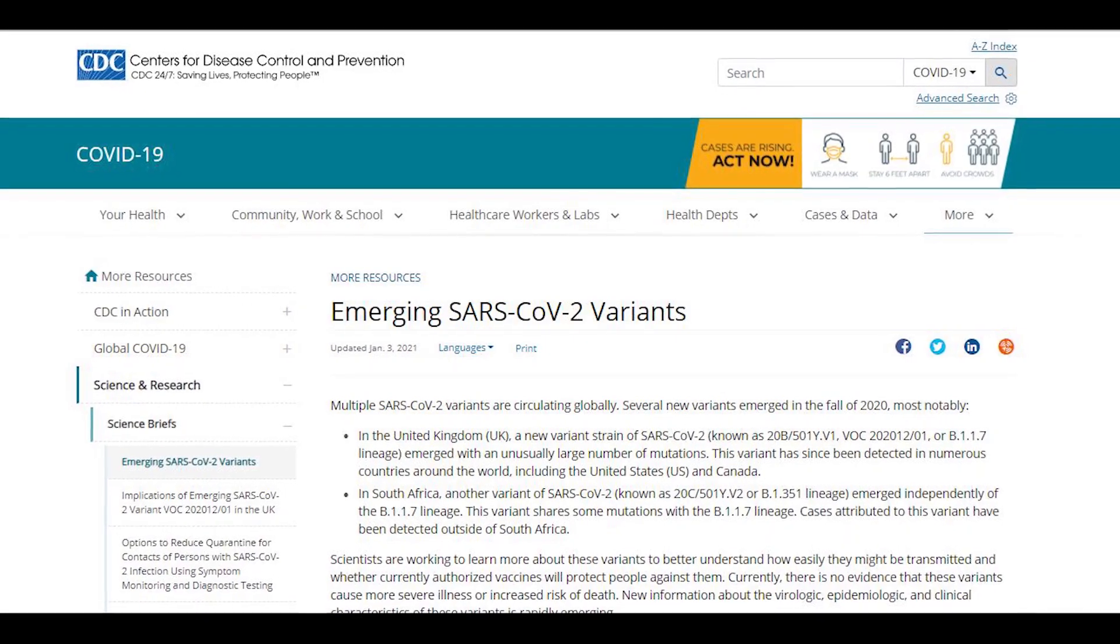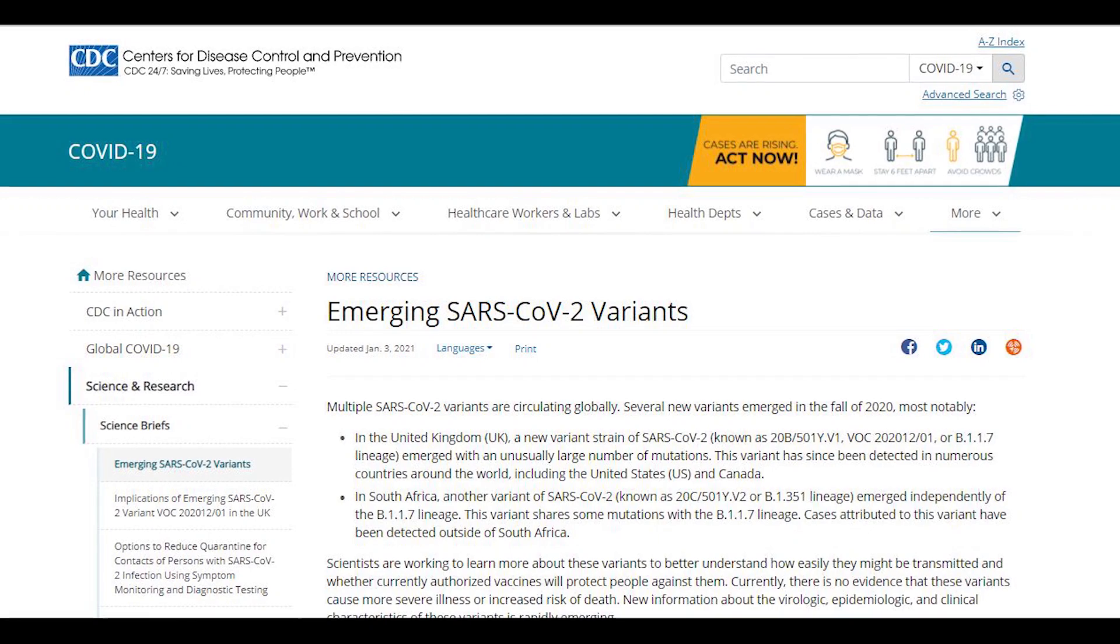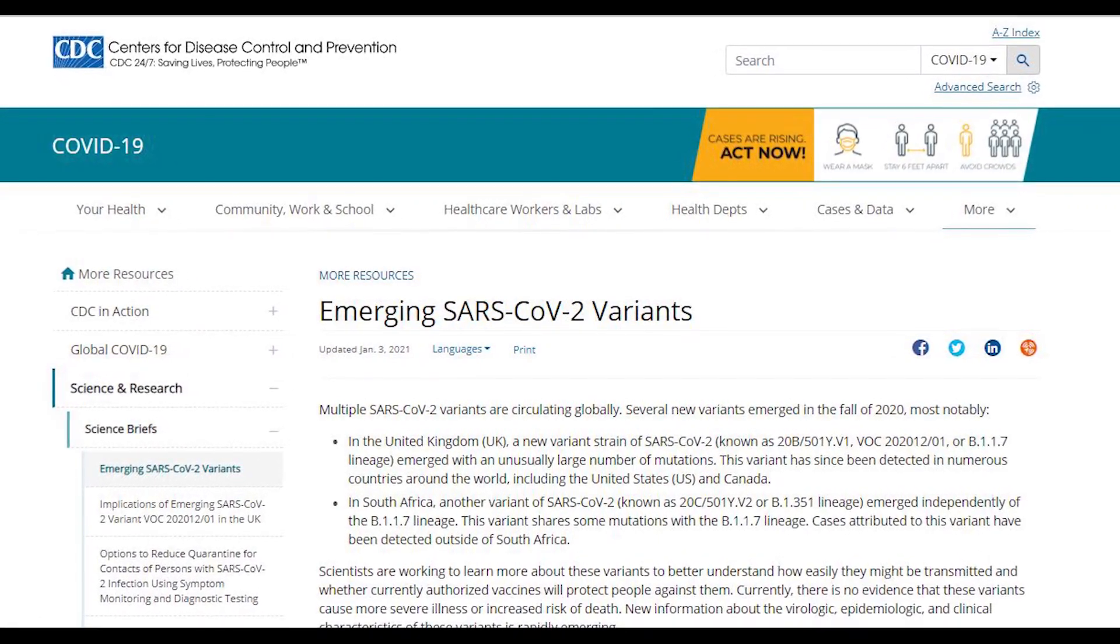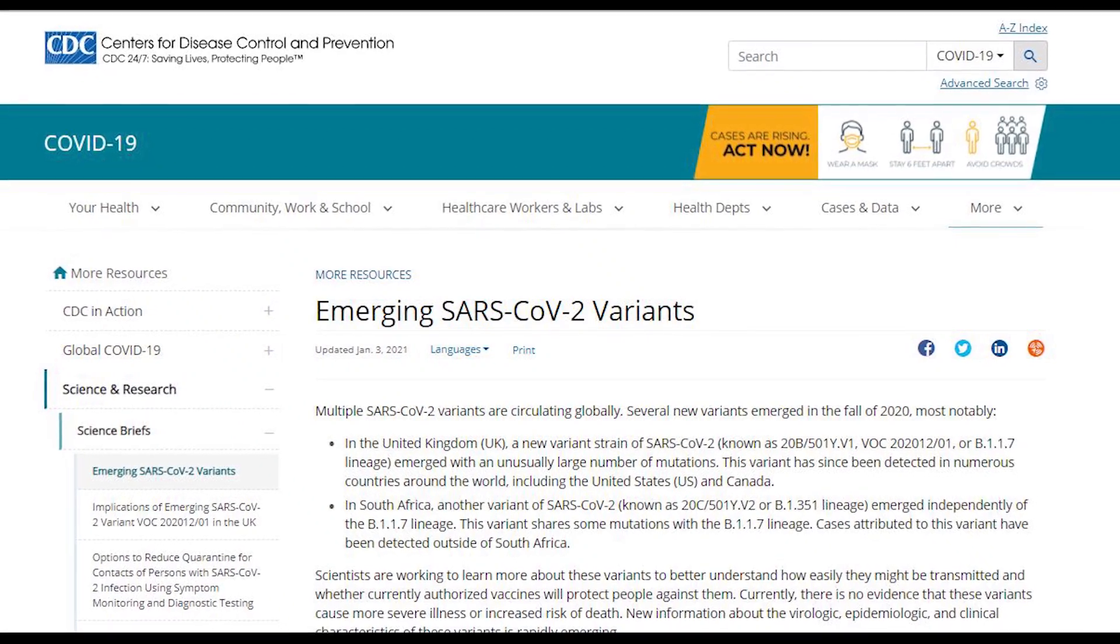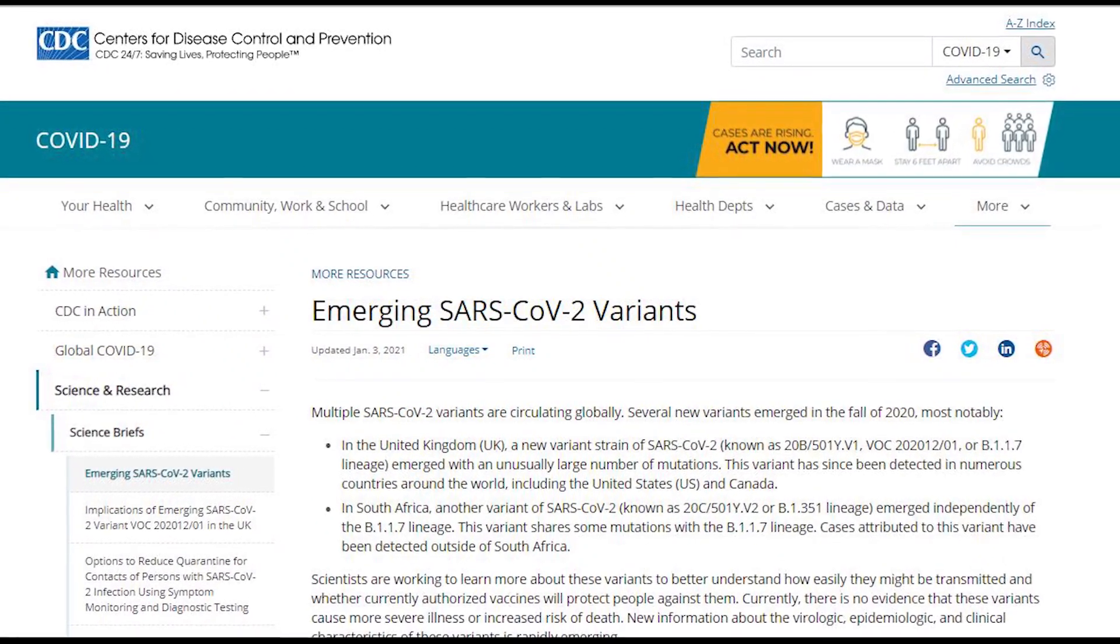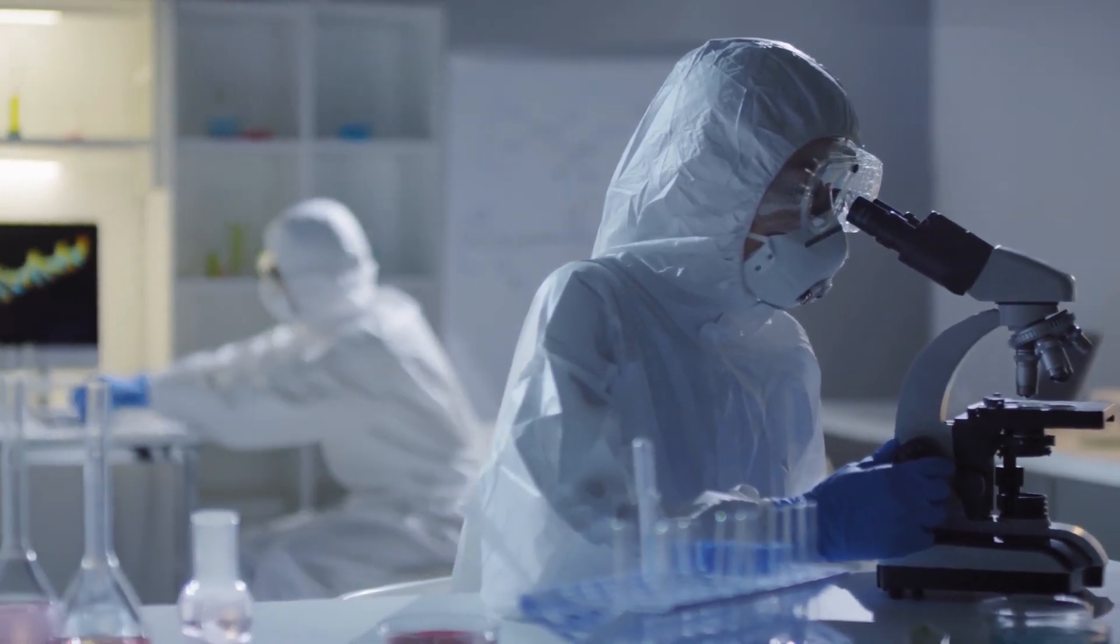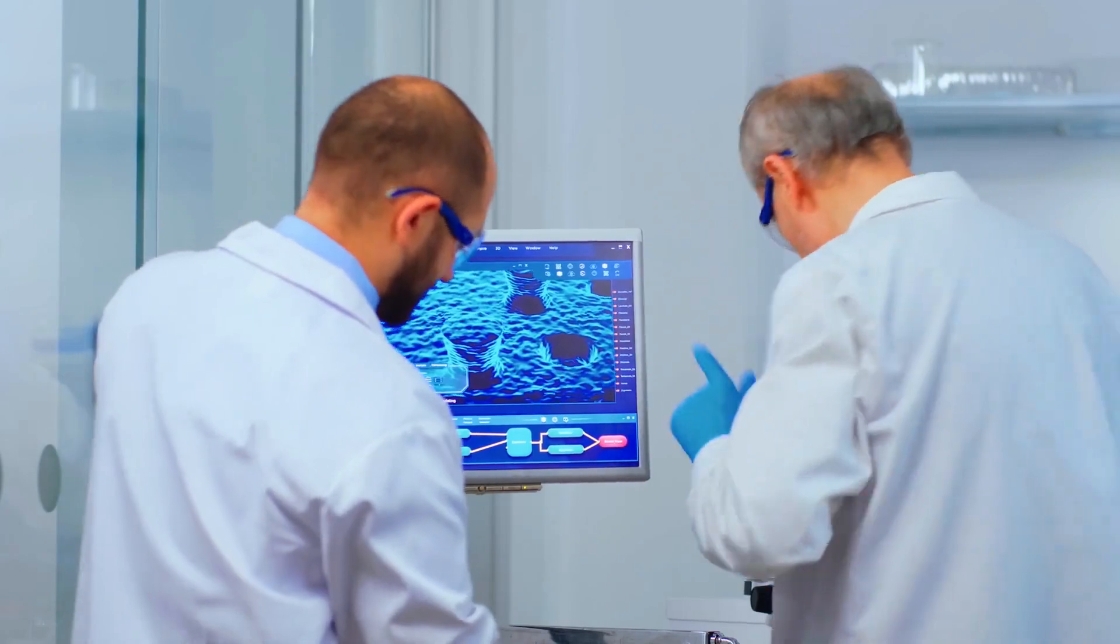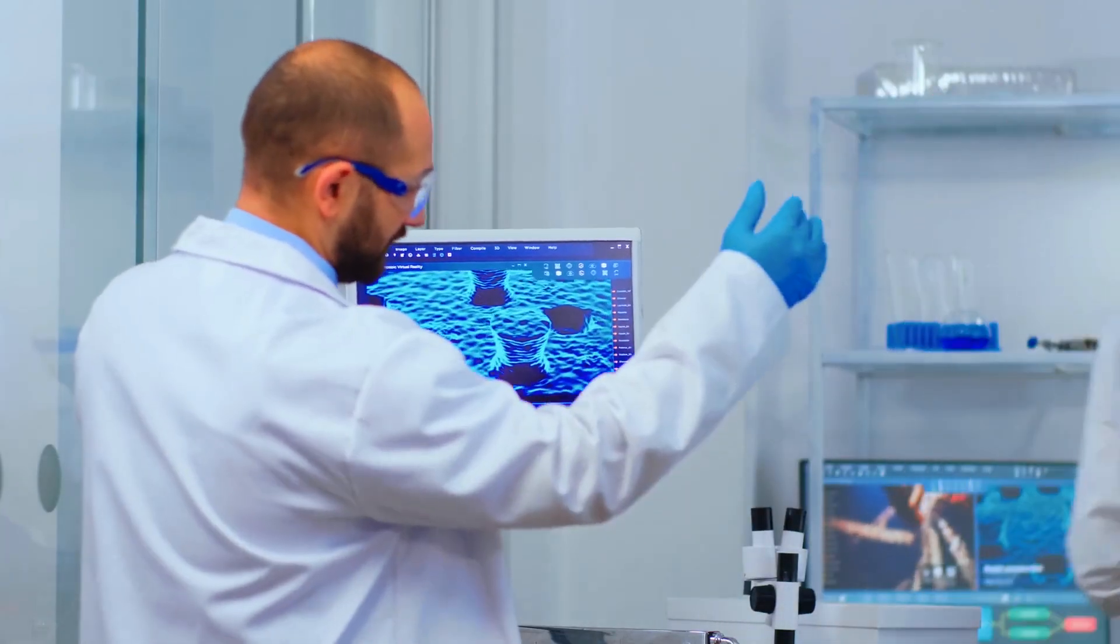According to the U.S. CDC, the South African B.1.351 variant emerged independently of the UK strain B.1.1.7. Both exhibited high transmissibility rates in reported cases. However, B.1.351 has a few more surprises.